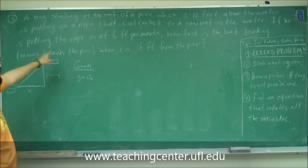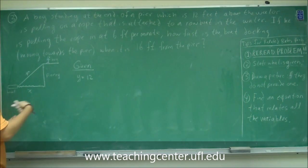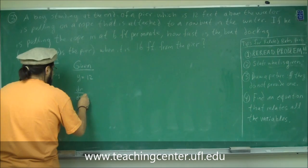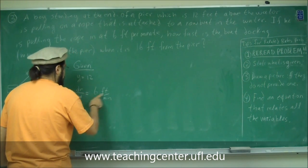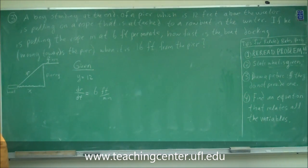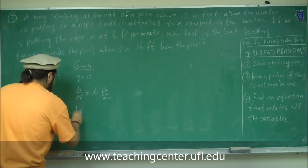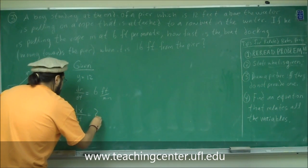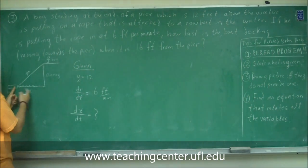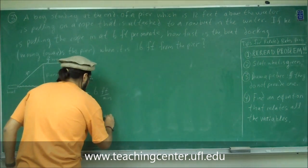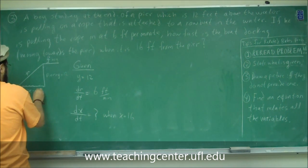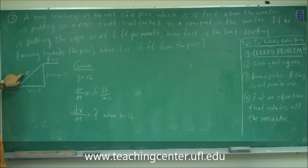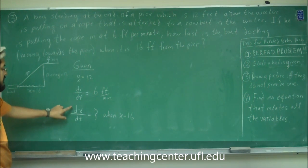If he is pulling the rope in at 6 feet per minute, so as a change in R: dr/dt is equal to 6 feet per minute. How fast is the boat docking — moving in the X direction? So what we want to find is dx/dt when it is 16 feet from the pier, meaning when X equals 16. So we have Y=12, X=16, and dr/dt=6. We want to find dx/dt when X is 16.